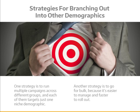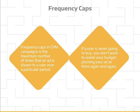One strategy that big advertisers use is to run multiple campaigns across different groups. Each of those campaigns targets just one niche demographic with its own ad and landing page. The alternative strategy is to go for bulk — some advertisers do spread their CPM campaigns relatively widely because it's easier to manage and faster to roll out. They don't have to keep checking their stats and trying different ads and landing pages to see what works. It saves time, but it's also more expensive in the long run. You'll also want to use frequency caps in CPM campaigns — the maximum number of times that an ad is shown to a user over a particular period. Three times a day is best, although some advertisers have found that frequency as high as three times an hour can work too.